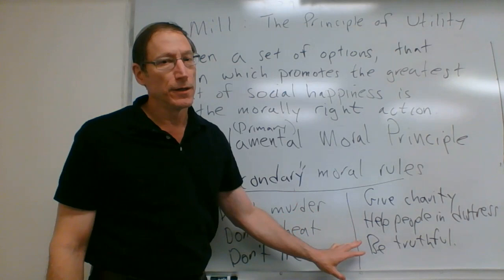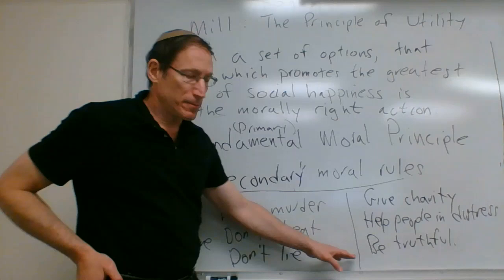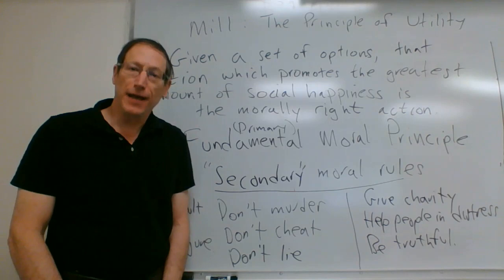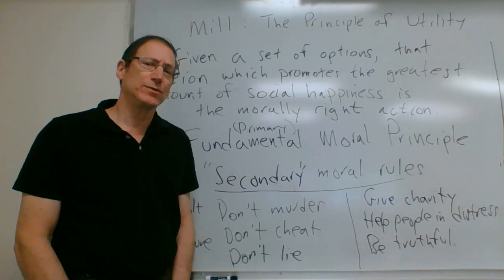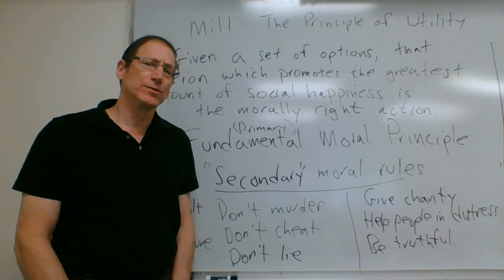One of the differences between the fundamental moral principle and the secondary moral rules is that the reason why these secondary rules are true is because of the fundamental principle. Another difference is that the fundamental moral principle has no exceptions — it is something that you should always obey without exception. These secondary moral rules, however, have legitimate exceptions. There are times when for any one of these rules, there might be an exception.